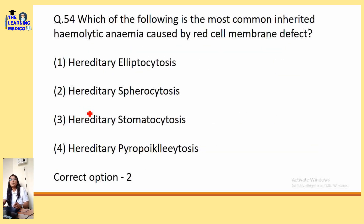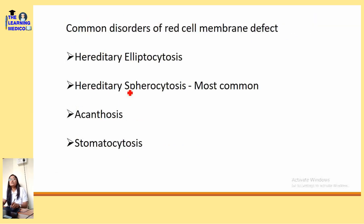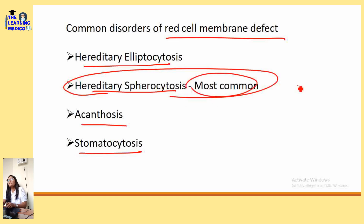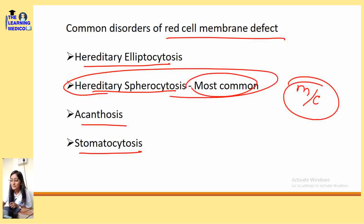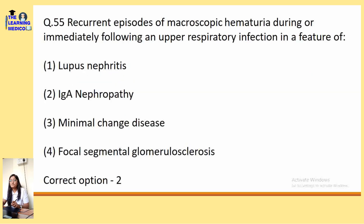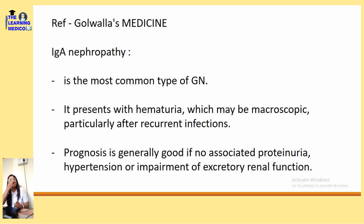The most common inherited hemolytic anemia caused by red cell membrane defect is hereditary spherocytosis. Common disorders of red cell membrane defect include hereditary elliptocytosis, hereditary spherocytosis, acanthosis, and stomatosis. Hereditary spherocytosis is the most common.